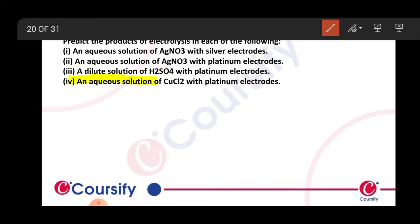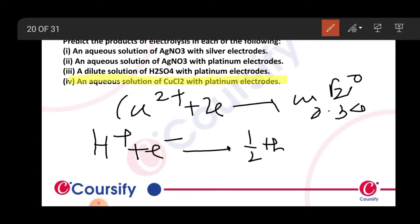Next, an aqueous solution of copper chloride with platinum electrodes. At the cathode: Cu²+ + 2e- → Cu, E0 = 0.34. H+ + e- → ½H2, E0 = 0.00. The reaction with higher reduction potential is 0.34, so copper deposition will occur at the cathode.